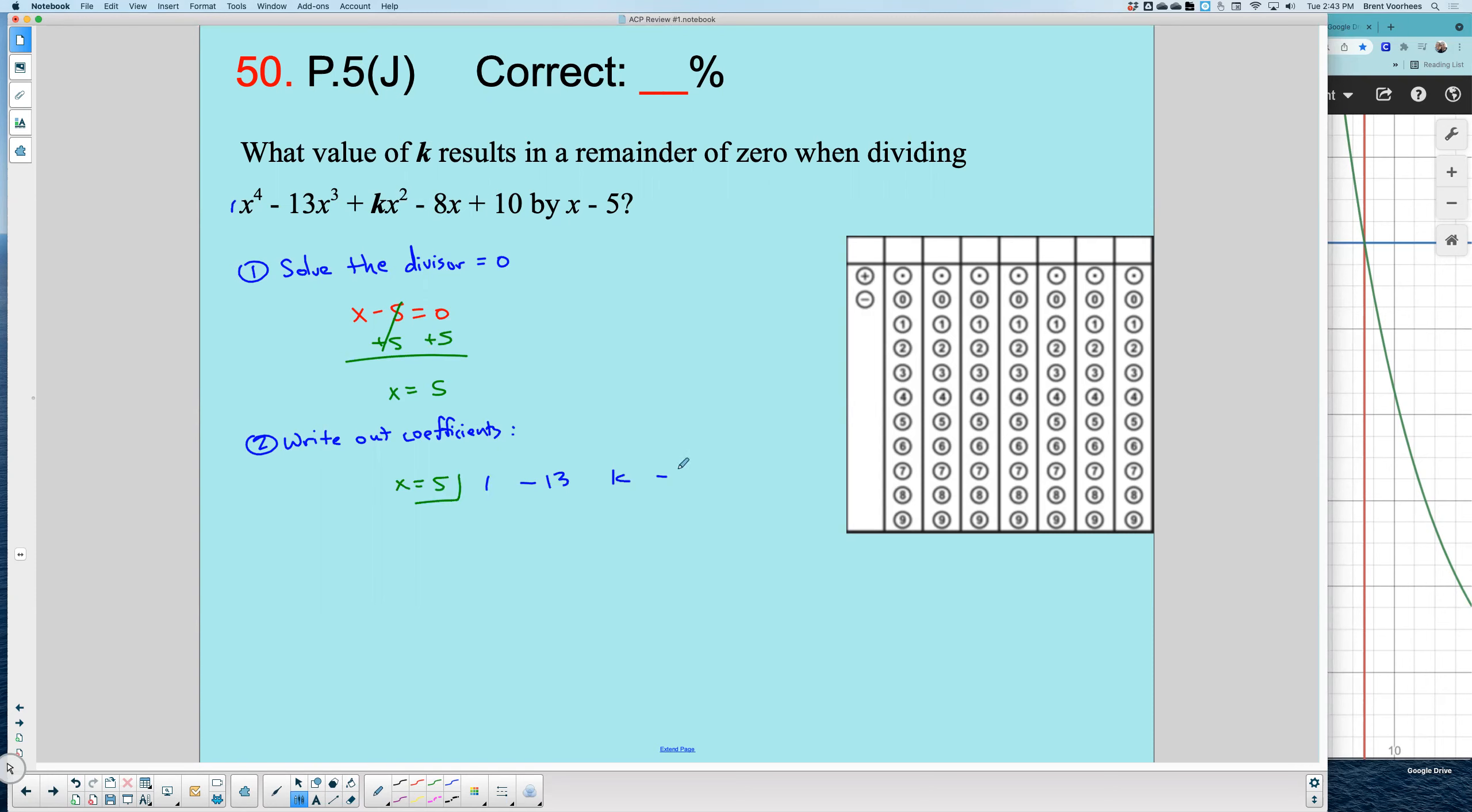And you need to be checking for missing powers. If you have a missing power, you need to throw in a zero as a placeholder. That would be x to the first and plus 10.